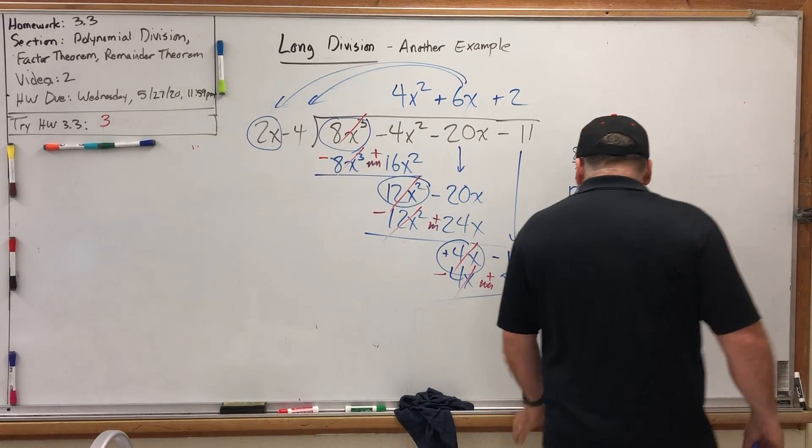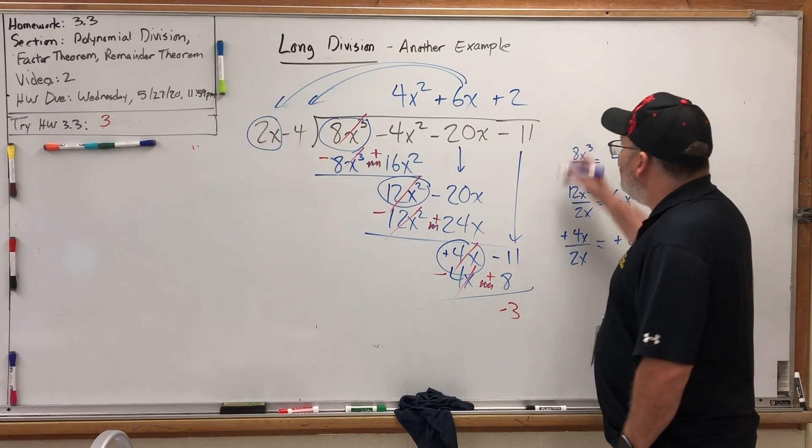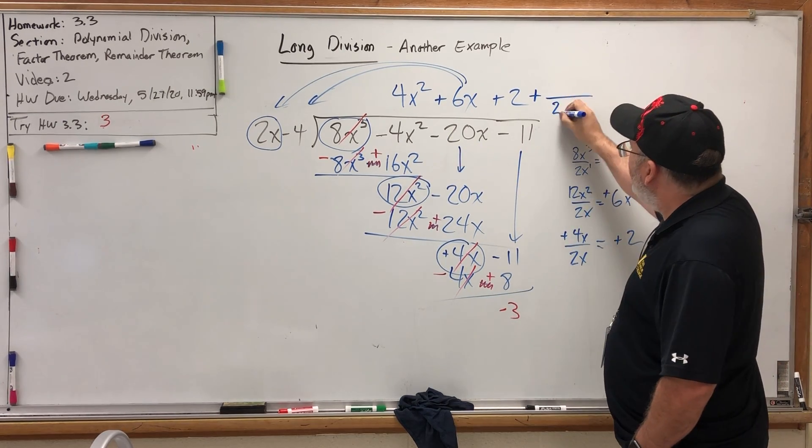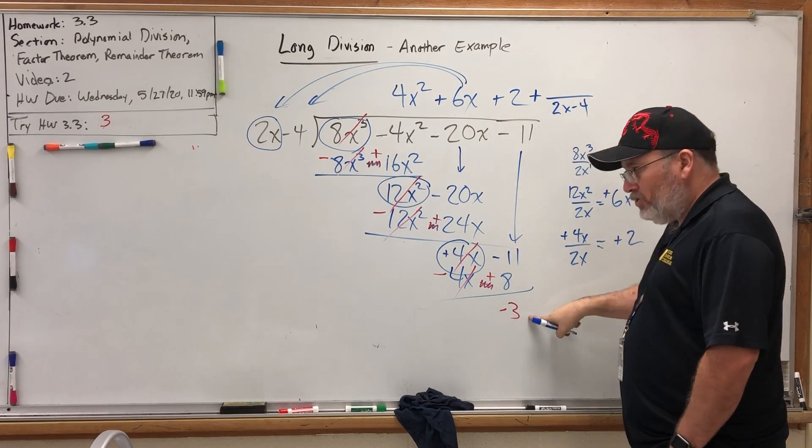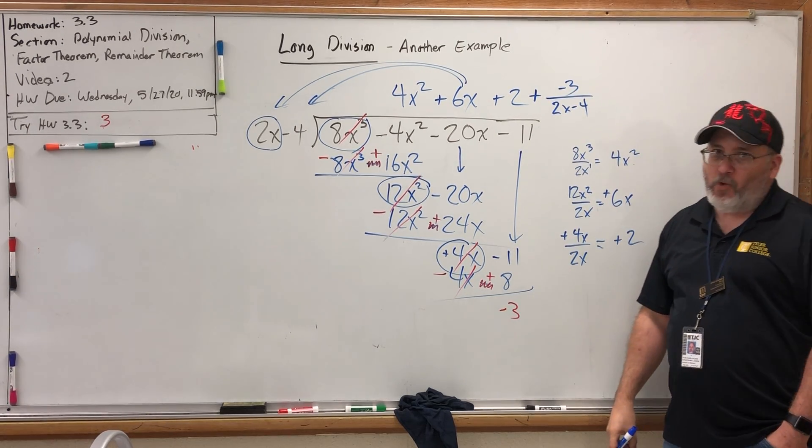There's actually two ways to write this remainder as part of the quotient. The way that always works is to write a plus sign, put a fraction, put the divisor underneath, and then whatever the remainder is, write it on top. So plus -3 over 2x - 4.